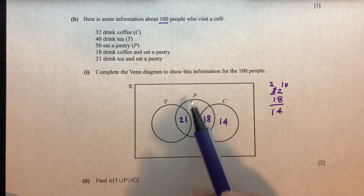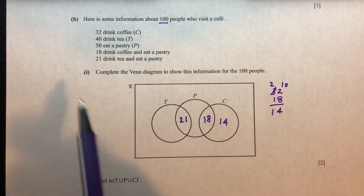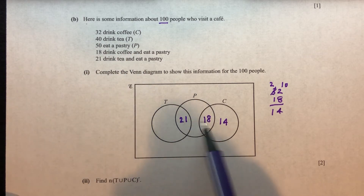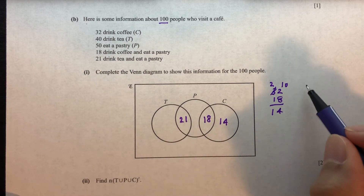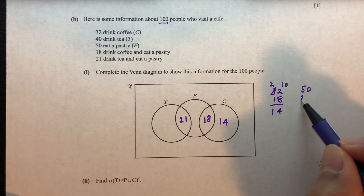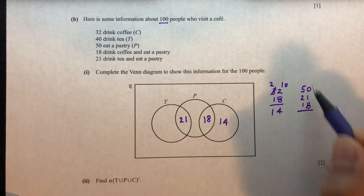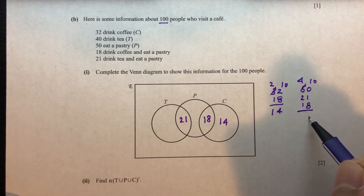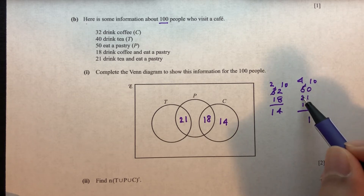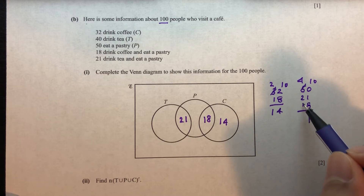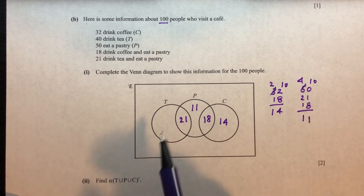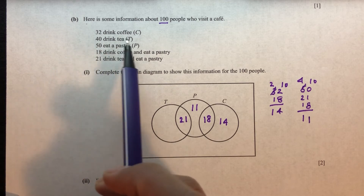P represents pastry. 50 eat pastry total. Only pastry = 50 minus 21 minus 18 = 11. Then 40 drink tea. Only tea = 40 minus 21 = 19.